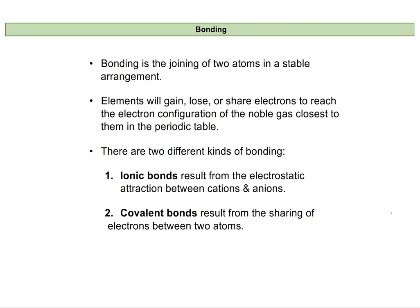Bonding is when two atoms join together into a more stable arrangement. This means that the elements coming together will have to gain, lose, or share electrons to reach an electron configuration that's similar to a noble gas.